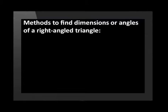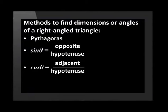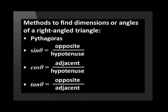In a right-angled triangle, there are two ways of finding either dimensions or angles. If we are given two sides in a right-angled triangle, we use Pythagoras' theorem to find the third side. If we are given a side and an angle, we use the trigonometric ratios to find the other side. Sine theta equals opposite over hypotenuse. Cosine theta equals adjacent over hypotenuse. Tangent theta equals opposite over adjacent.